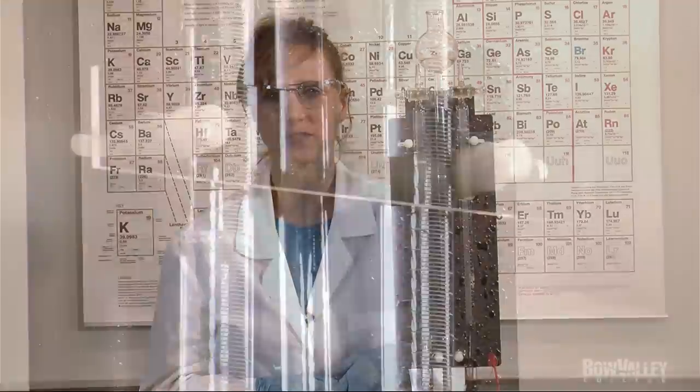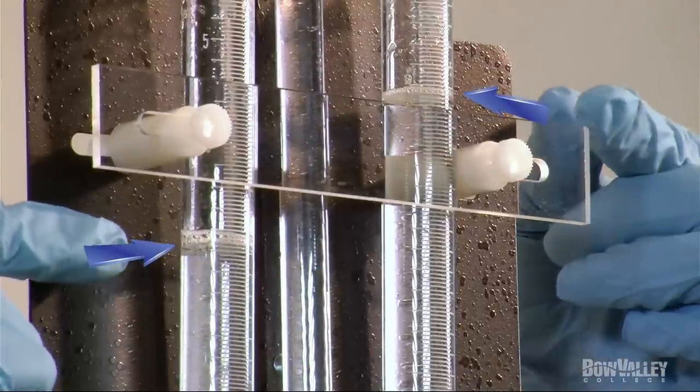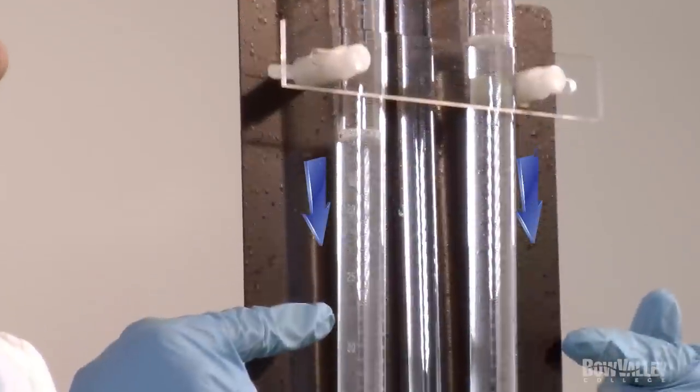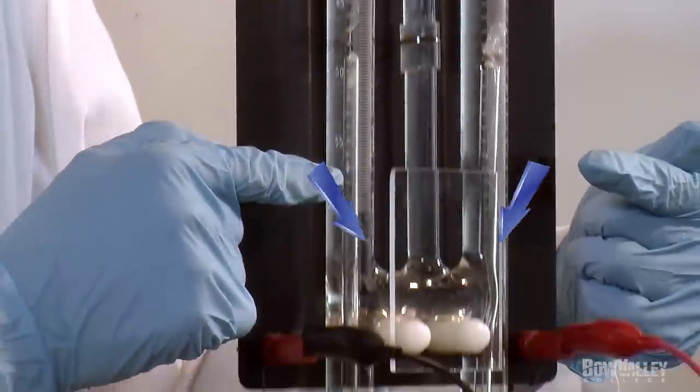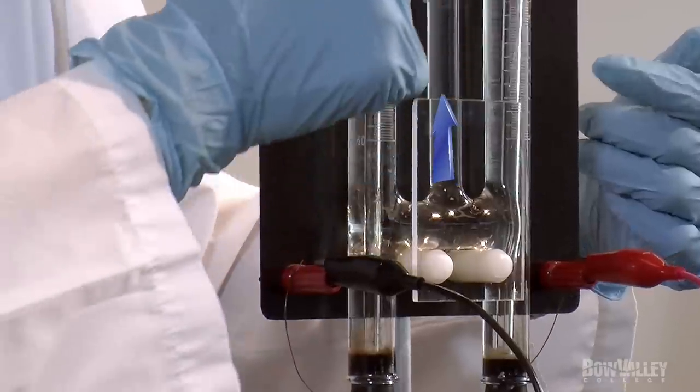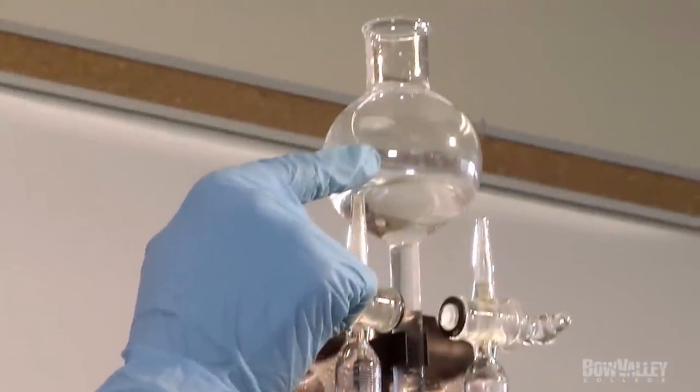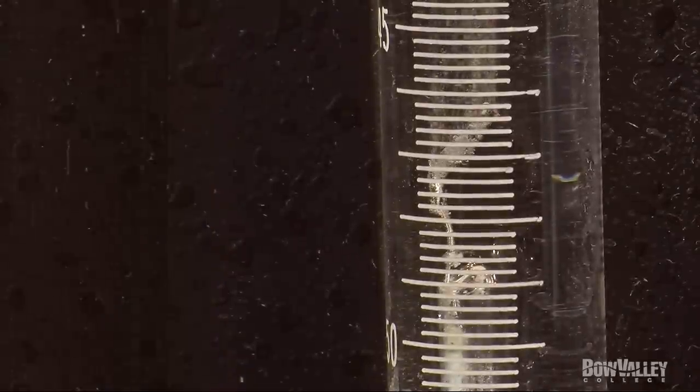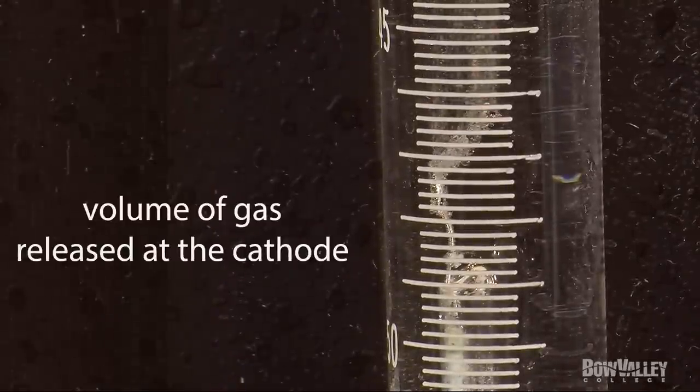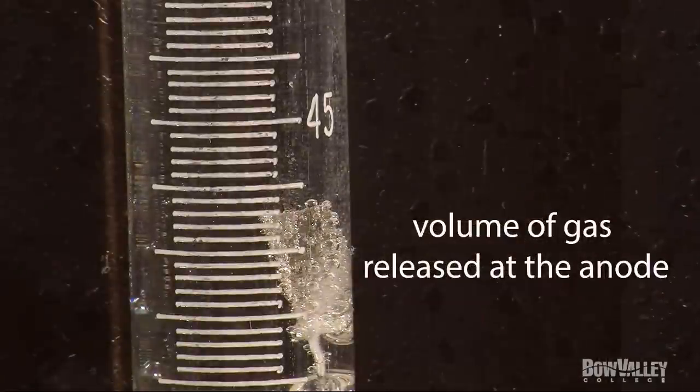After some time, we will see a significant amount of gas has collected in each tube. The gas has pushed the remaining water into and up the central tube. You may notice that the volume of gas released at the cathode is double the amount of gas released at the anode.